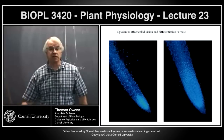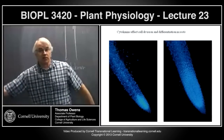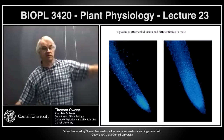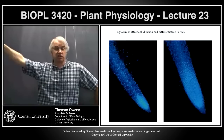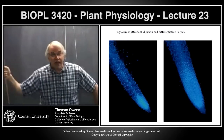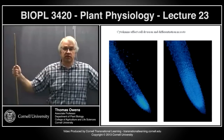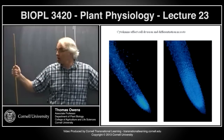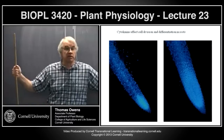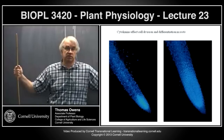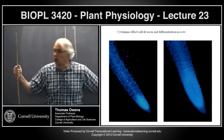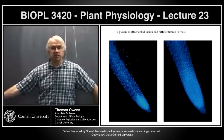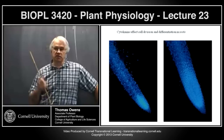Take away cytokinin in the shoots — the meristem is smaller. Take away cytokinin in the roots — the meristem gets larger. What's the explanation? The key has to do with differentiation. In the roots, one of the main roles cytokinin plays is controlling the rate of cell differentiation following cell division. Higher cytokinin levels in the root promote differentiation. If the cells differentiate, they stop dividing, so the meristem stays smaller.